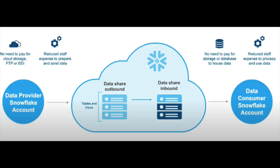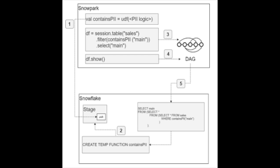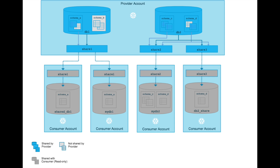In Snowflake, sharing is straightforward — you create a secure view, add it to a share, and give your reader account (your third party) access to view that data and generate insights from it. We've looked end-to-end at how you can take and process unstructured data, store it in Snowflake, and process it using a combination of Java UDFs with Snowpark before sharing it back to external users in a secure way using the Snowflake Data Marketplace.